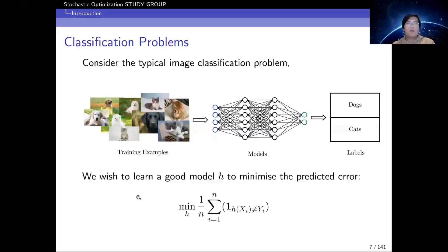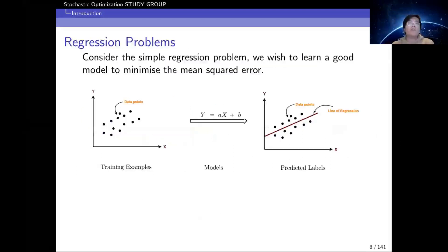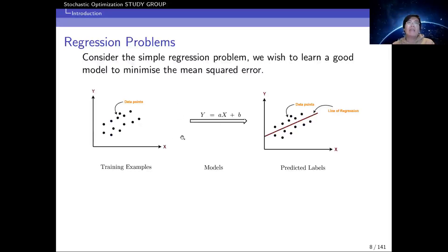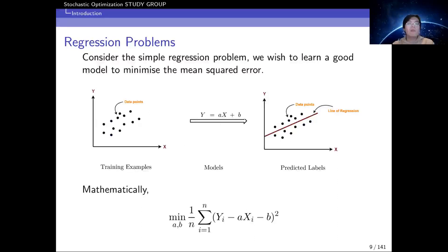We can also consider regression problems: given data points Xi and Yi in two dimensions, we wish to learn a linear function Y = AX + B that fits this data with minimum mean squared error. This is the well-known linear least squares problem, which can be formulated as an optimization problem. In this case A and B have a closed-form solution, but in most cases it is relatively hard to get one.